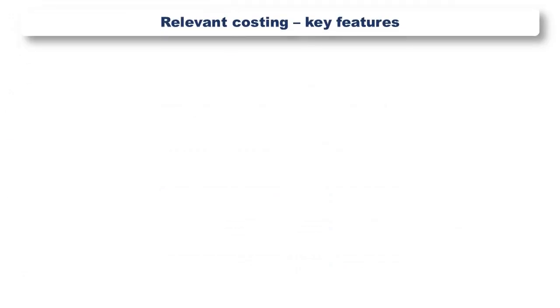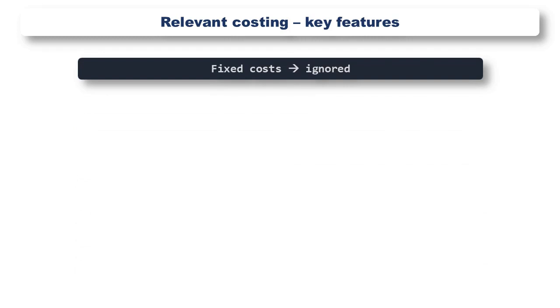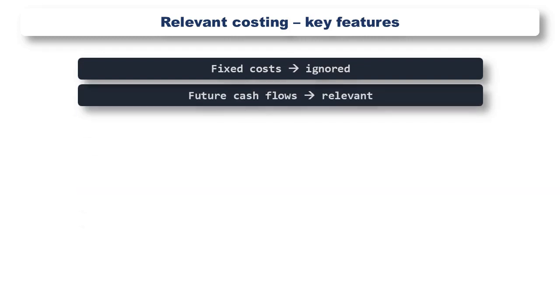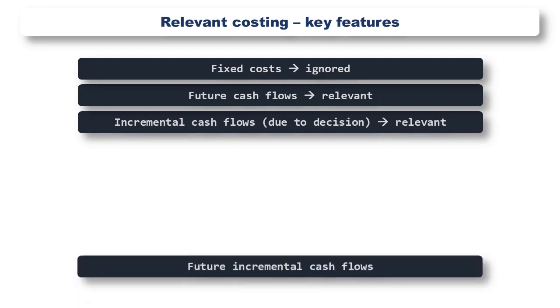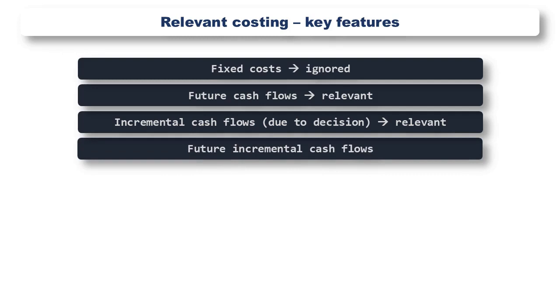Before we move on, we need to remember a few key features of relevant costing. As a reminder: fixed costs are ignored unless they change as a result of the decision. We only consider future cash flows, and we only consider changes in those cash flows as a result of the decision we are making. So we are only interested in future, incremental cash flows.